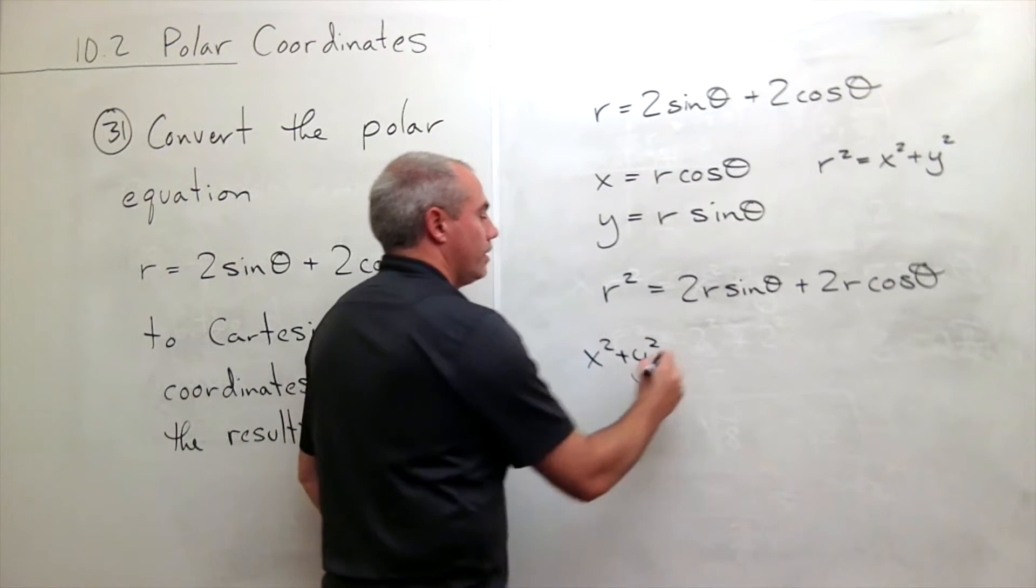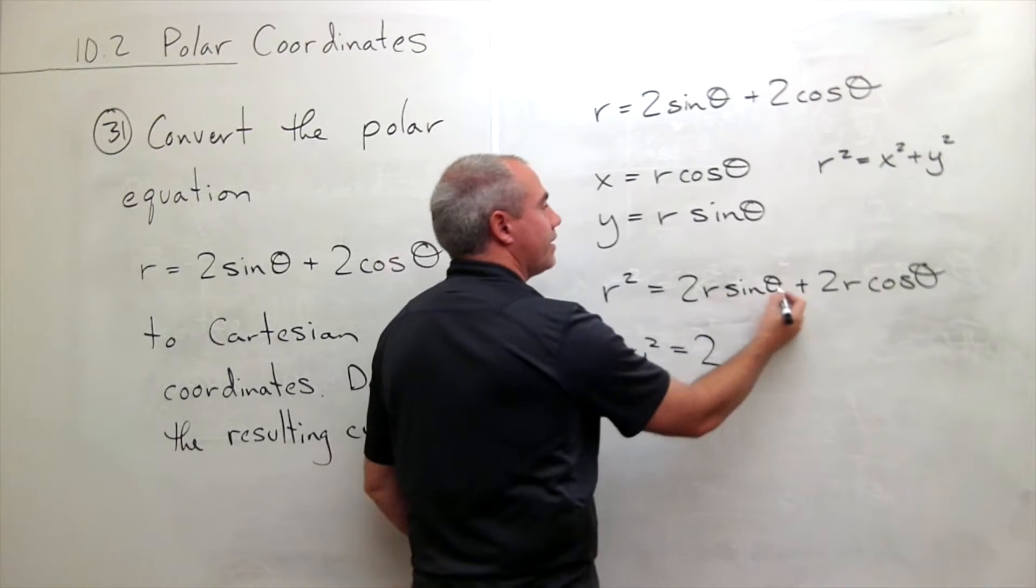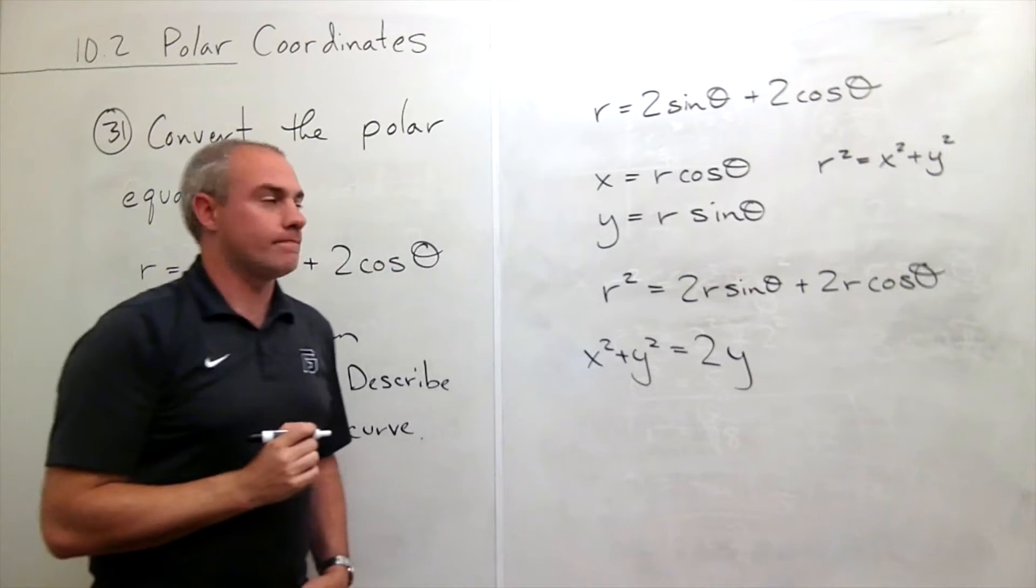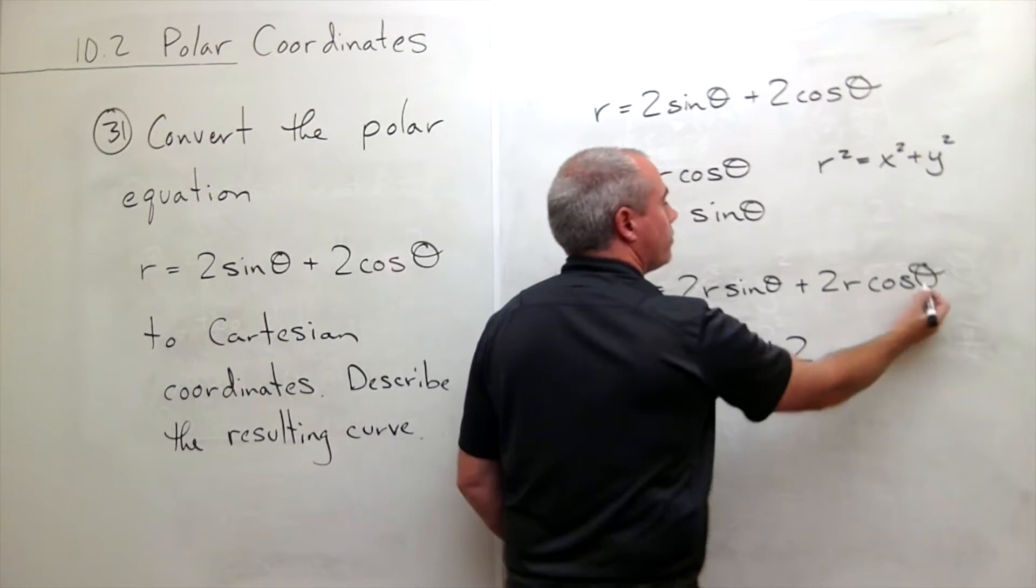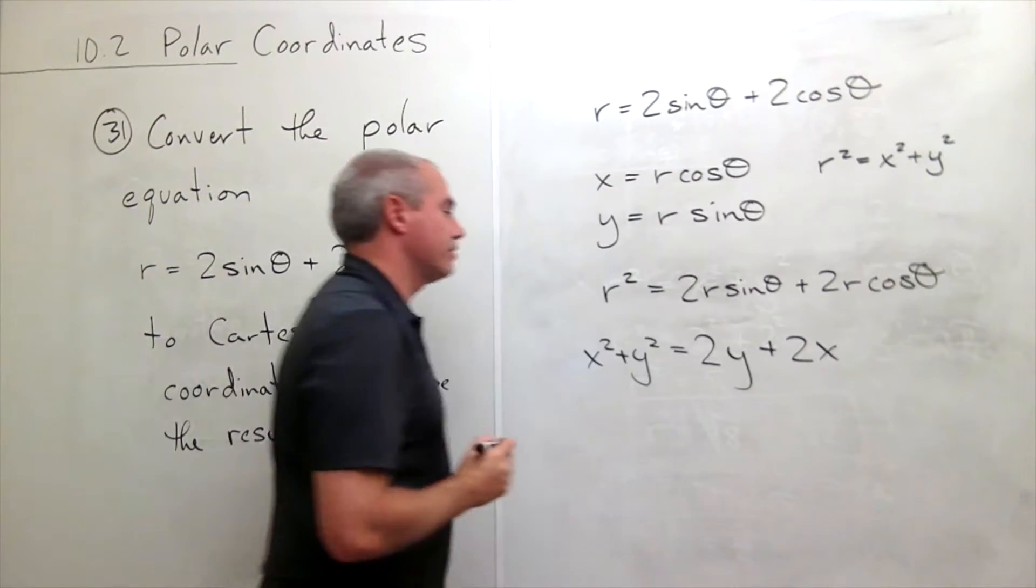And on the other side I get 2 times r sine theta, well r sine theta is y, so I just have 2y plus 2 times r cosine theta. r cosine theta is just x, so 2x.